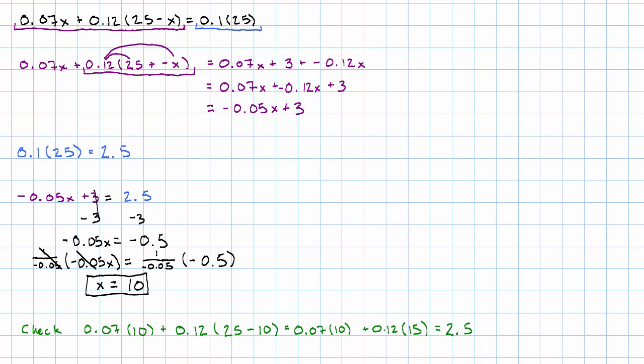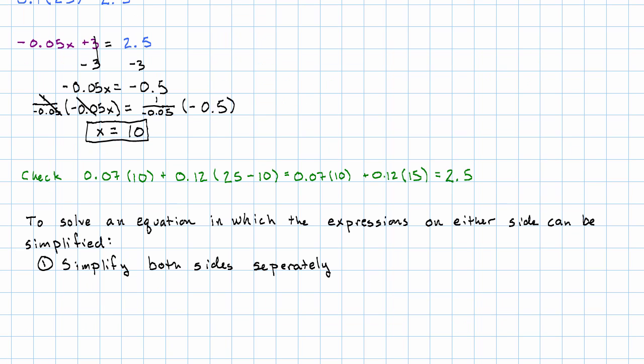So notice, what were my steps here when I encountered an equation in which the expressions on one side or the other could be simplified? First, we simplified both sides separately. Then we got rid of the constant. And then finally, we got rid of the coefficient. And that's the whole process for solving an equation, as long as the variable only shows up on one side.